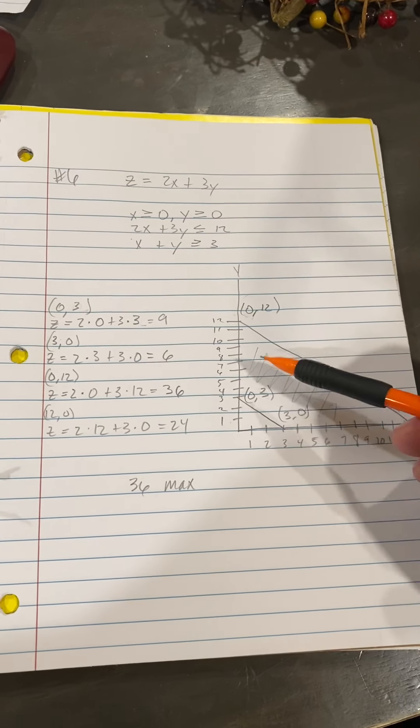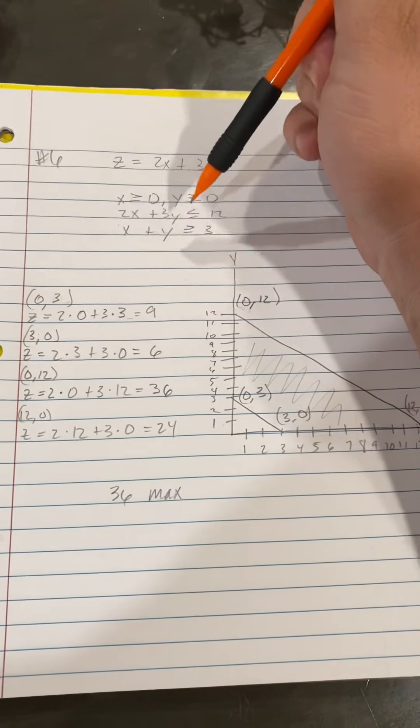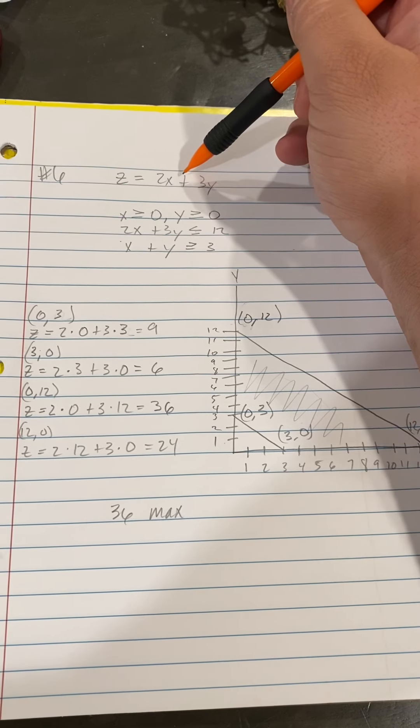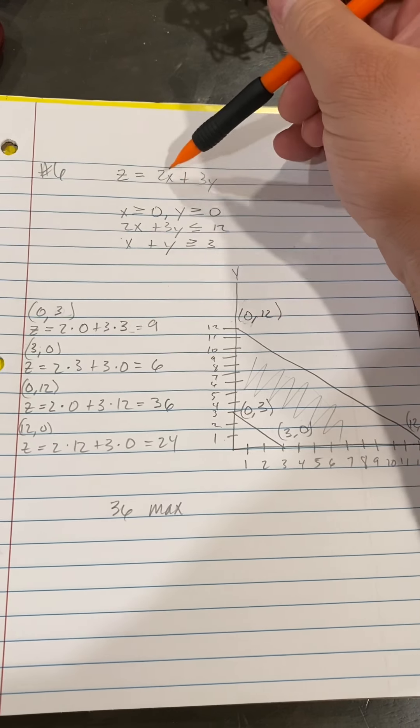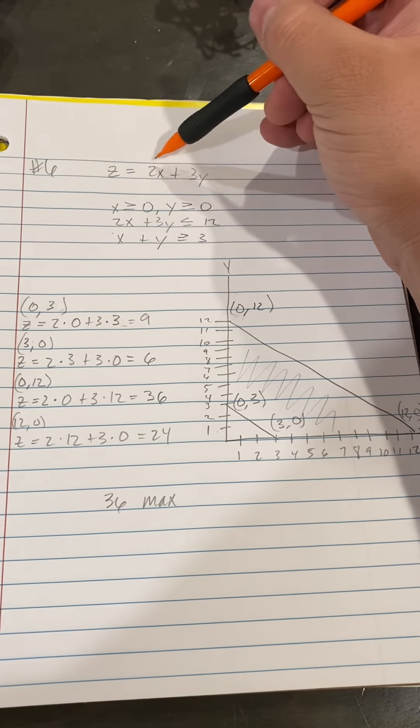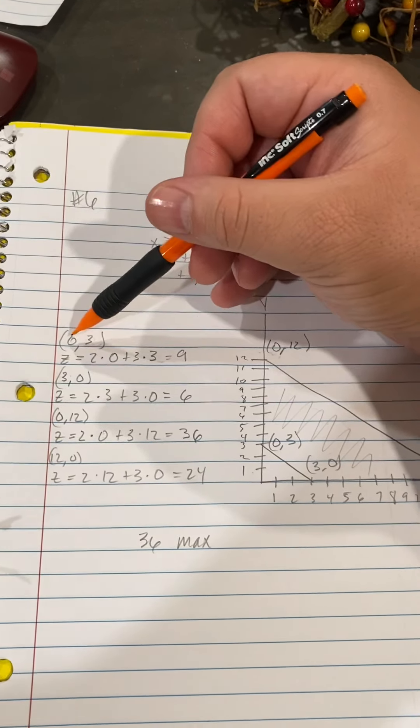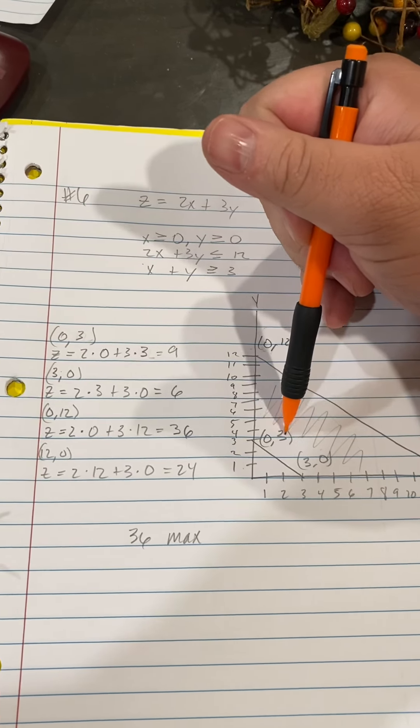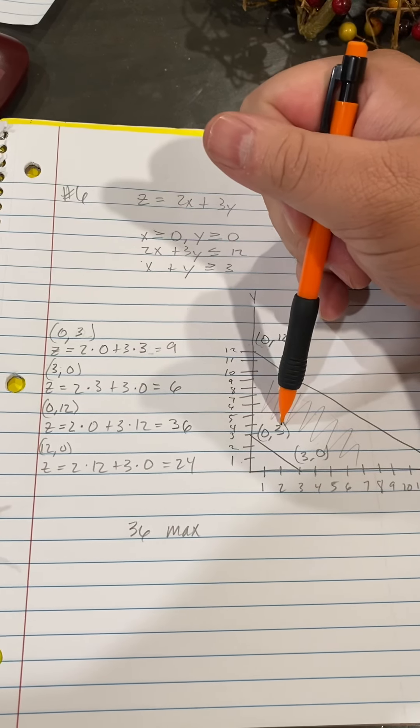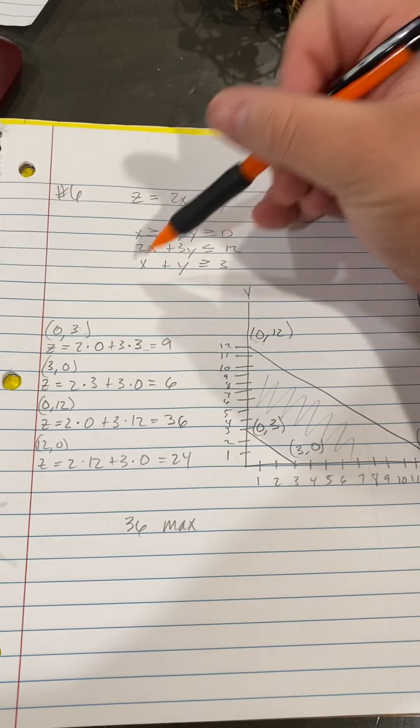Once we have that, then we write out each one of our values that we got here into our original equation, which is Z equals 2X plus 3Y. So then I went through and I took each value, (0,3) for X and Y, and I plugged it into Z equals 2X plus 3Y.